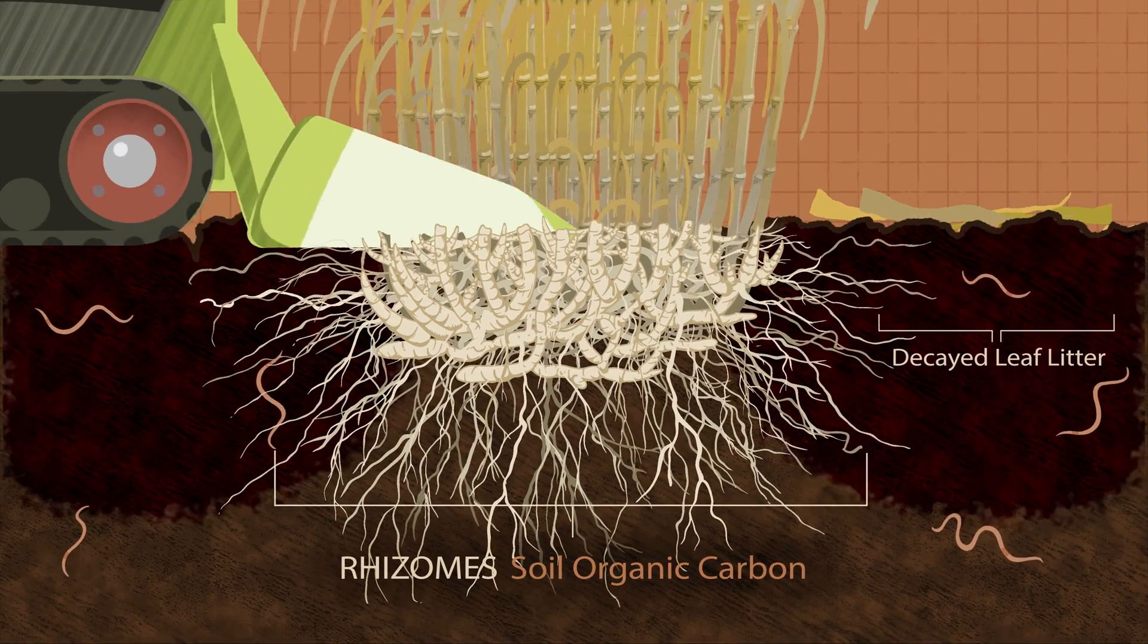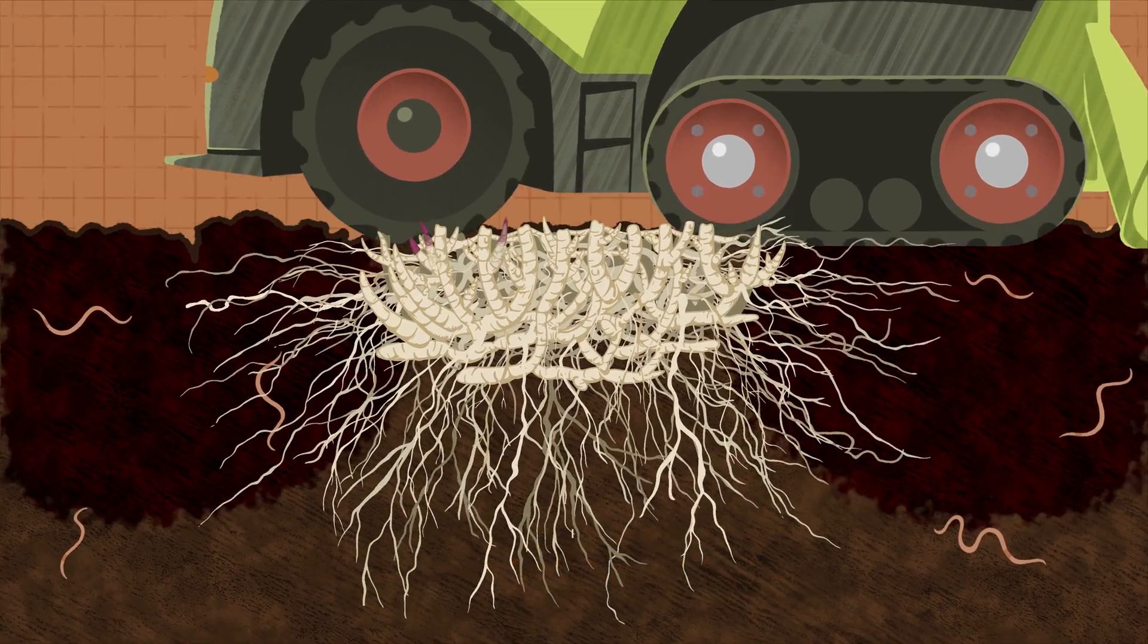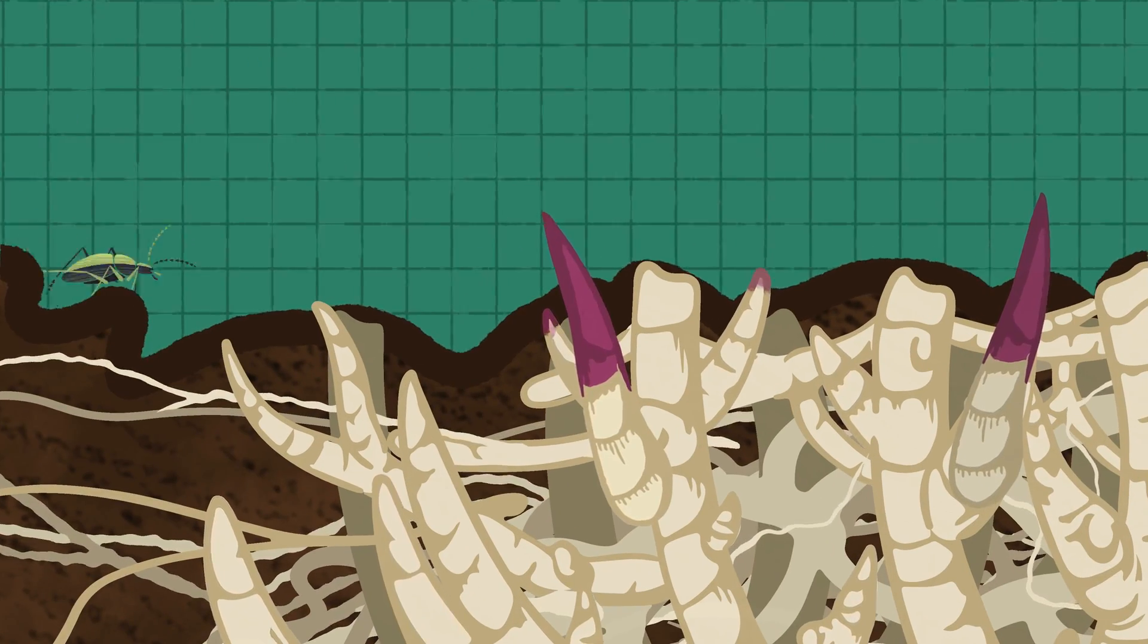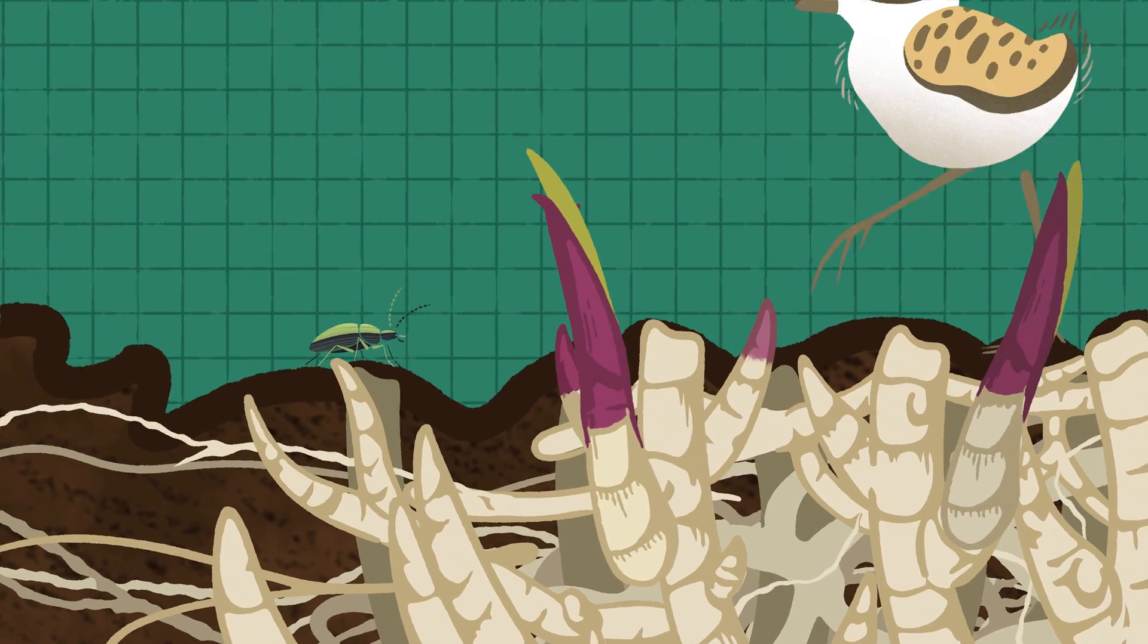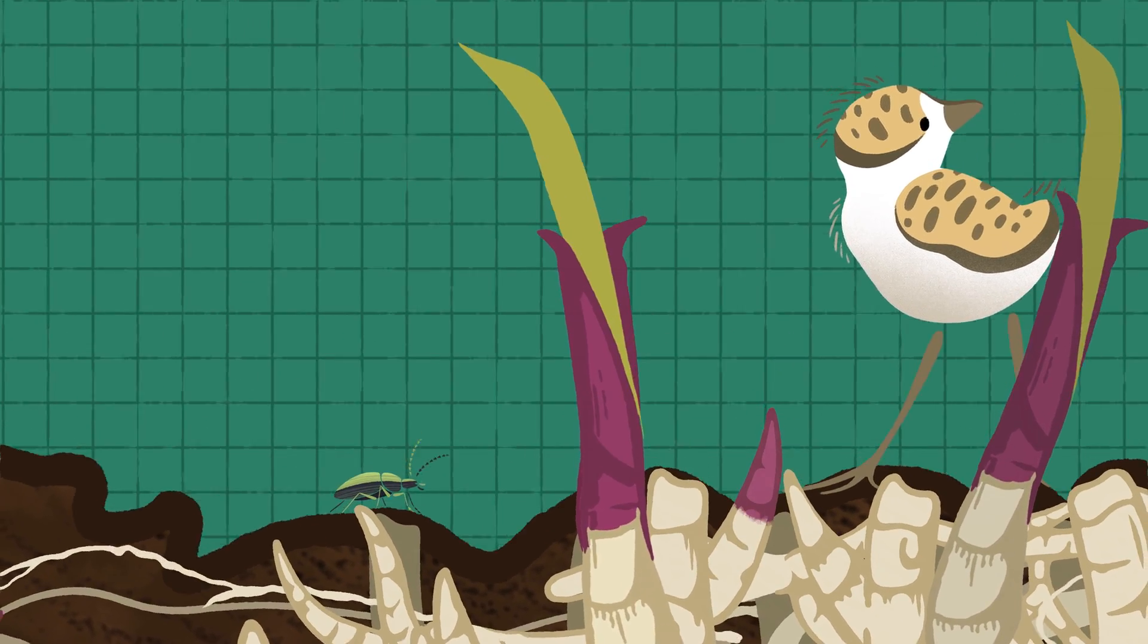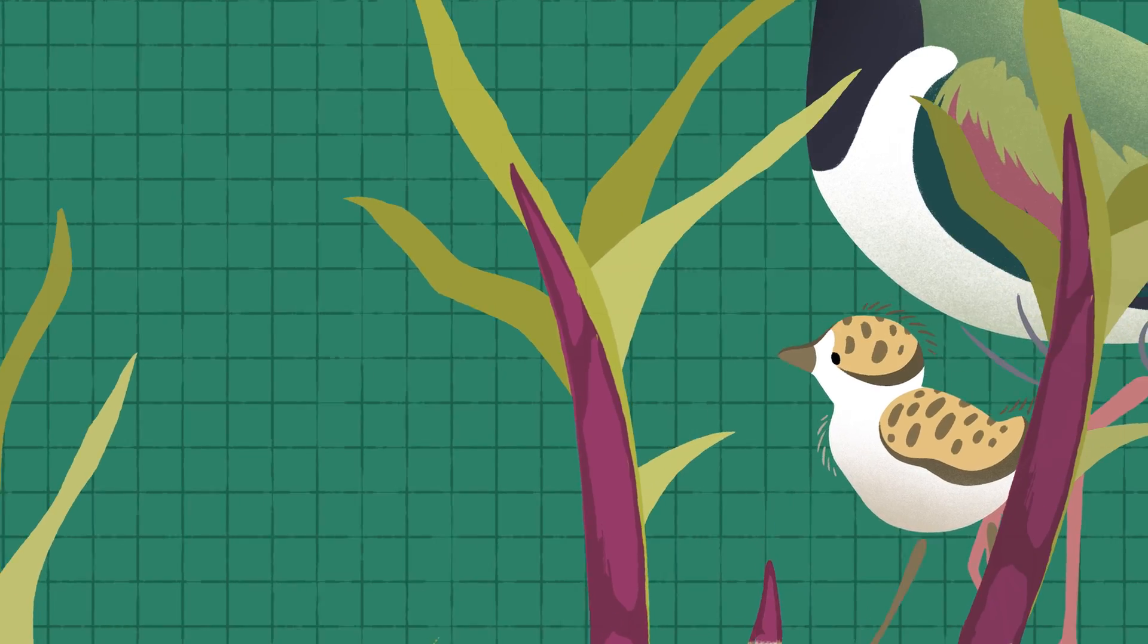every year it shuts down growth, stores and then recycles its own nutrients, ready to grow again next season. Therefore, zero fertilizer is required.